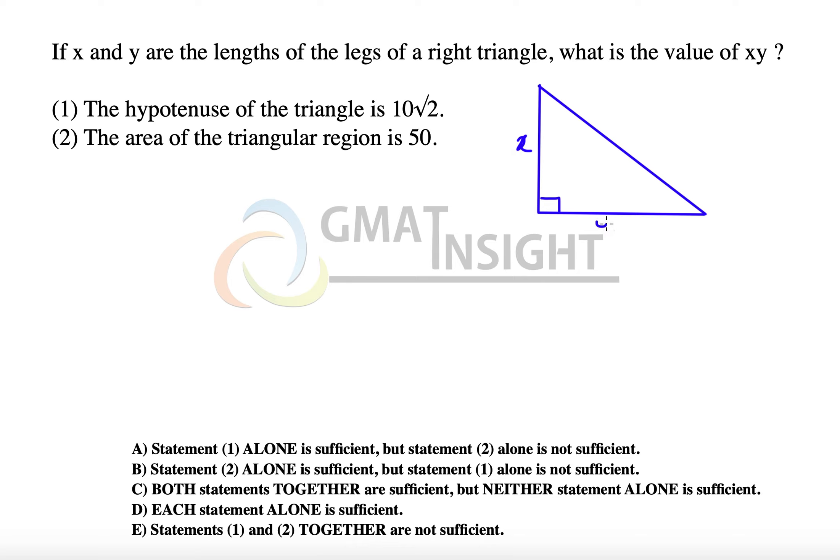x, y, and the question is: x times y equals what? We can see that the hypotenuse in this case will be equal to the square root of x squared plus y squared using the Pythagorean theorem.